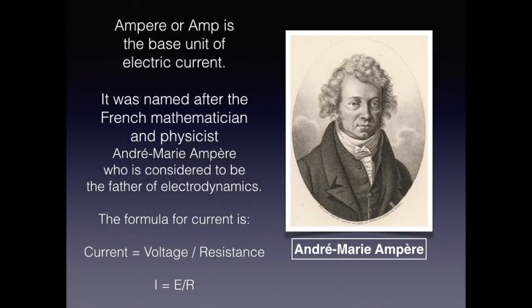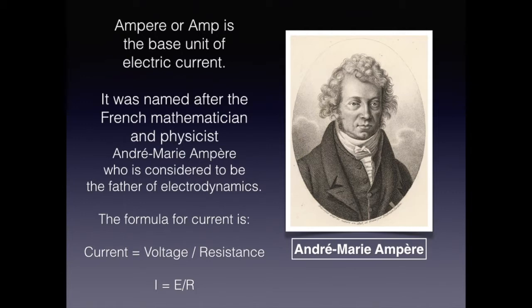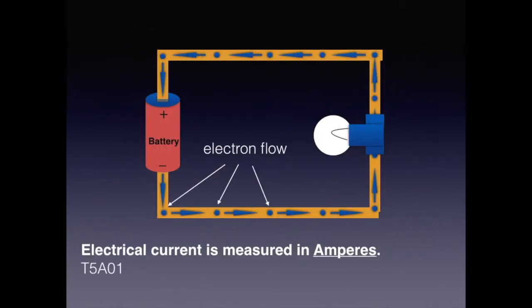The base unit for electric current is called an amp or ampere. It was named after the father of electrodynamics and French mathematician André-Marie Ampère. Current can be calculated by dividing voltage by resistance. The electrical symbol for current is I. The direction of electron flow has been a topic of debate for many years. For easy understanding, I teach that electrons flow from negative to positive. For the exam, know that electrical current is measured in amperes.